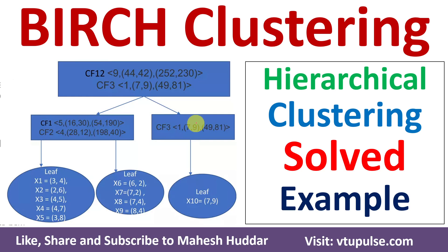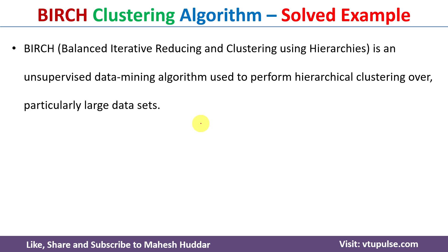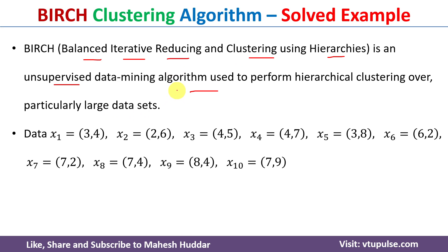Welcome back. In this video I will discuss the BIRCH clustering algorithm with the help of a simple solved example. BIRCH stands for Balanced Iterative Reducing and Clustering using Hierarchies. It is an unsupervised data mining algorithm used to perform hierarchical clustering over a given dataset. Usually when we have a large dataset, we use BIRCH to divide it into multiple groups. Here we have been given 10 data points with two components each.